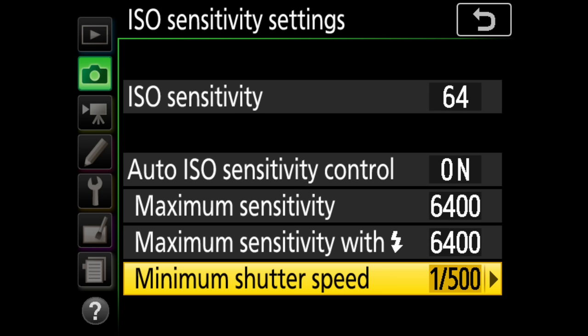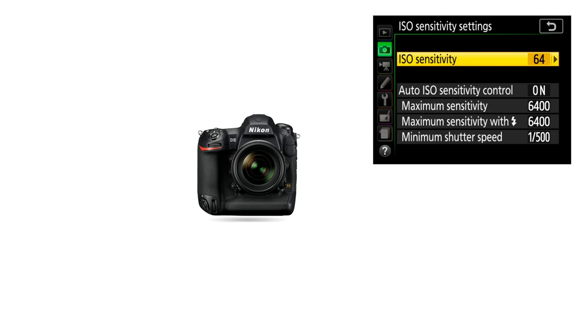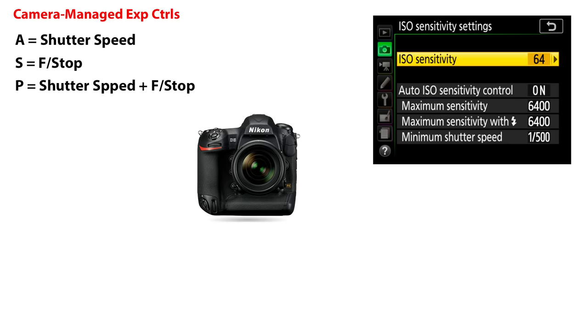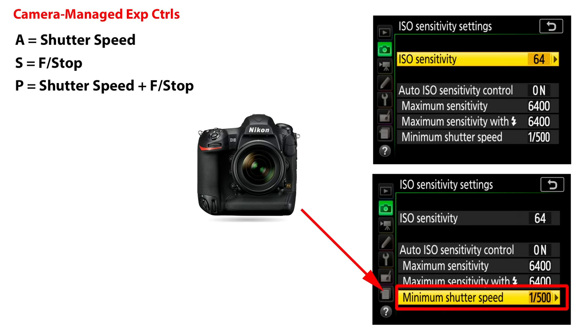Let's talk about how Auto ISO works with our various exposure modes. When Auto ISO is enabled the camera will always try to use your normal ISO setting first along with the exposure controls it manages, and will only dip into other ISOs when it can no longer maintain your requested shutter speed or maintain the proper exposure level.